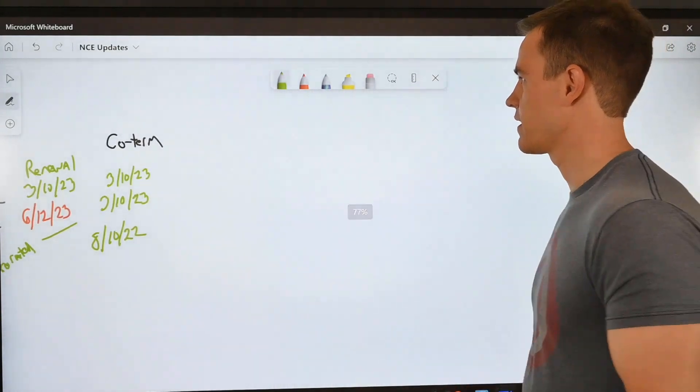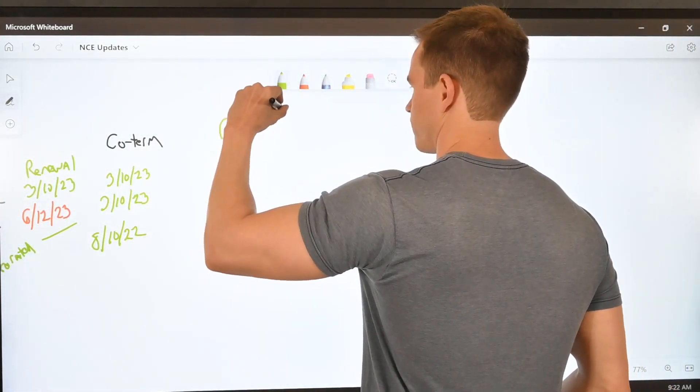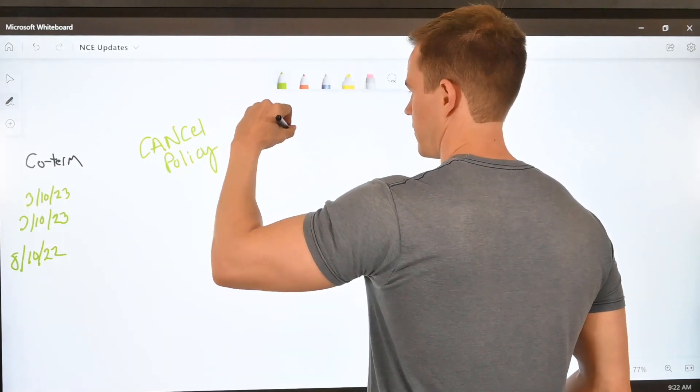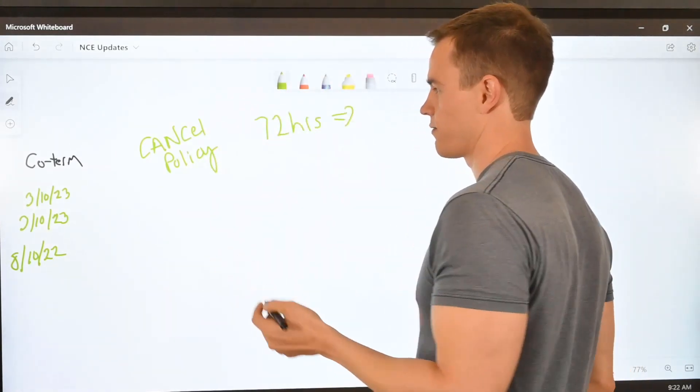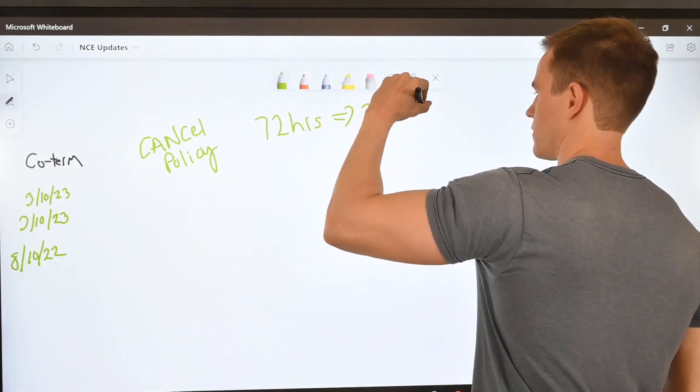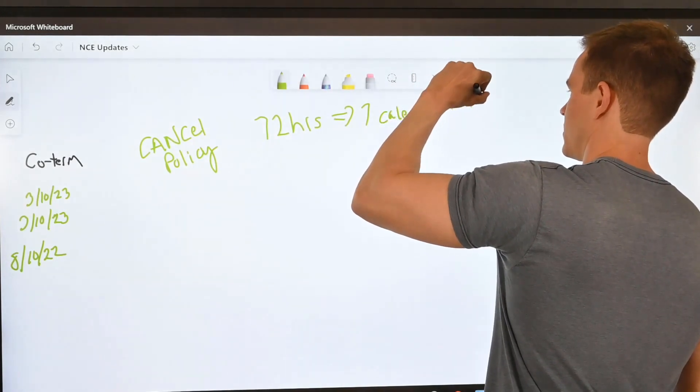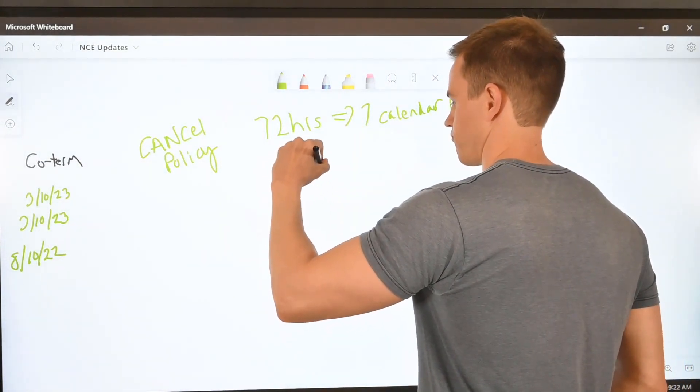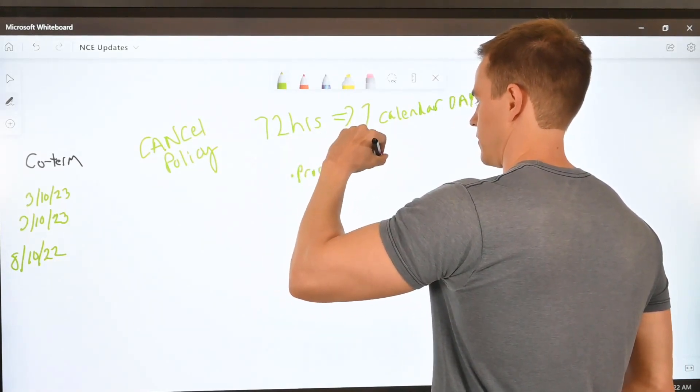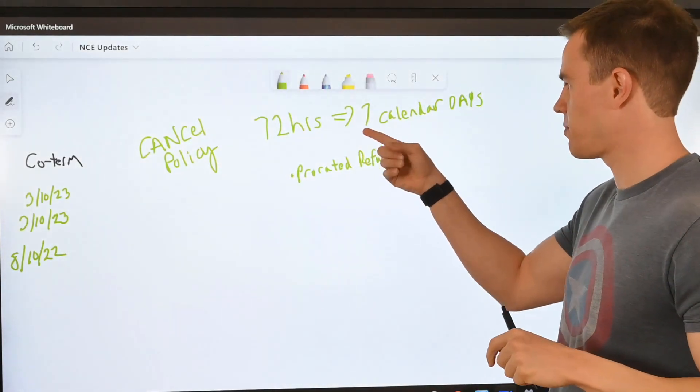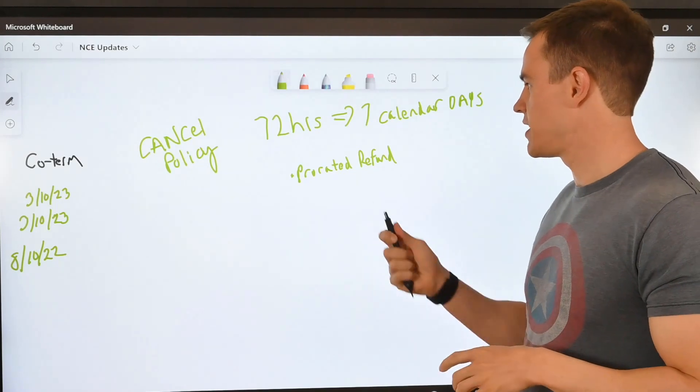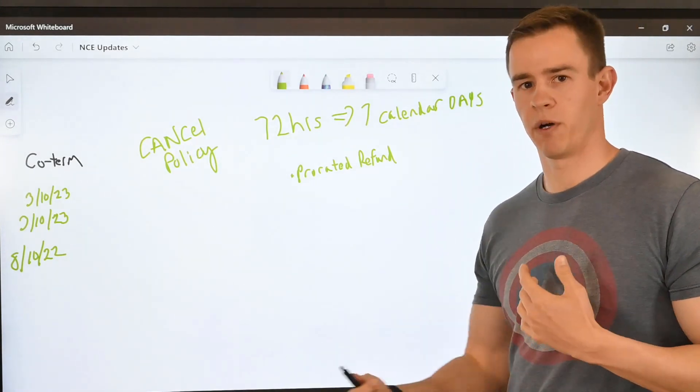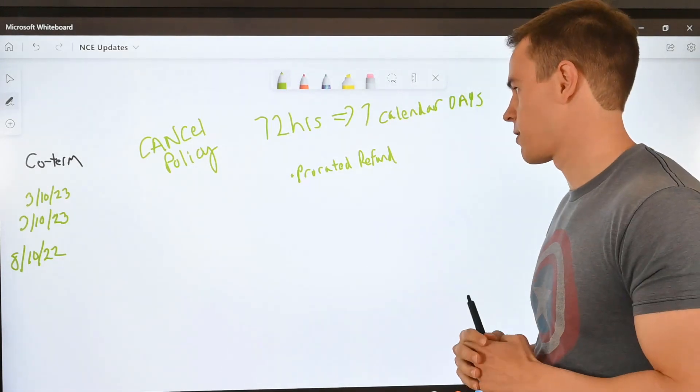The next one I want to talk about is the cancellation policy. With this one, this is huge—this came out last week. We're moving from 72 hour window for cancellation decrement into 7 calendar days. Your same rules still apply, meaning you have a prorated refund or the subscription itself is prorated based off the time in which you cancel the subscription. If you're 3 days into your 7 day renewal window, you'll be charged for those first 3 days if it's an annual commit or a monthly commit. But then you'll get the relief for the remainder of the subscription term.